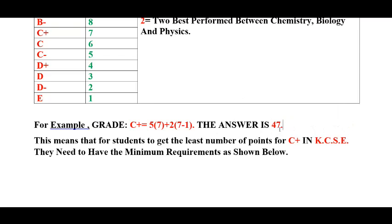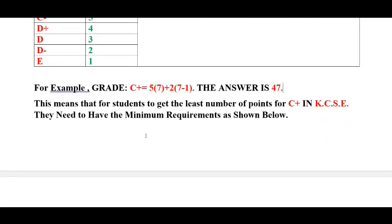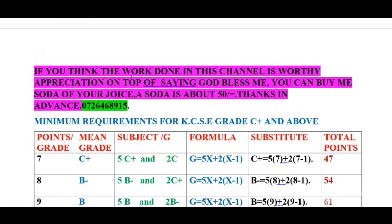This means that for a student to get a C plus in KCSE, they need at least 47 points. There are minimum requirements every student should know. Balancing your subjects is very important — knowing the minimum grade needed in every subject to get a C plus and above is essential, because many students don't know how to balance their subjects.